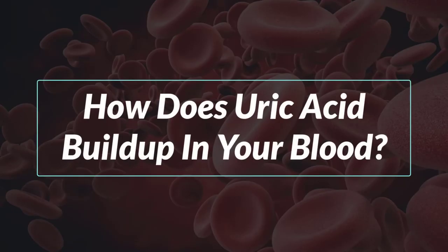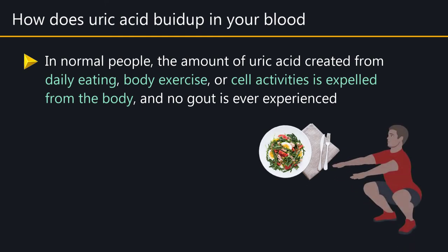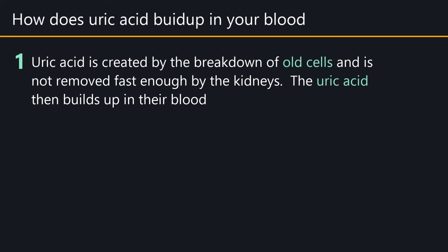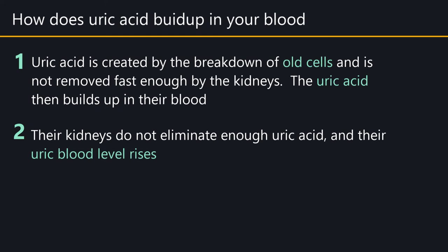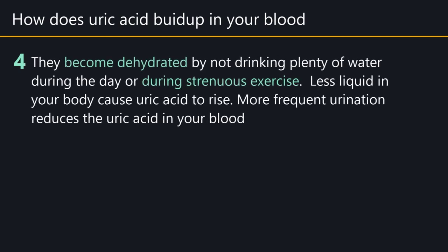In normal people, uric acid created from daily eating, exercise, or cell activity is expelled from the body. However, in some people, uric acid is not removed fast enough by the kidneys and builds up in the blood. Some people over-exercise causing excessive uric acid buildup, or become dehydrated by not drinking enough water during the day or strenuous exercise. Less liquid in the body causes uric acid to rise, while more frequent urination reduces it.